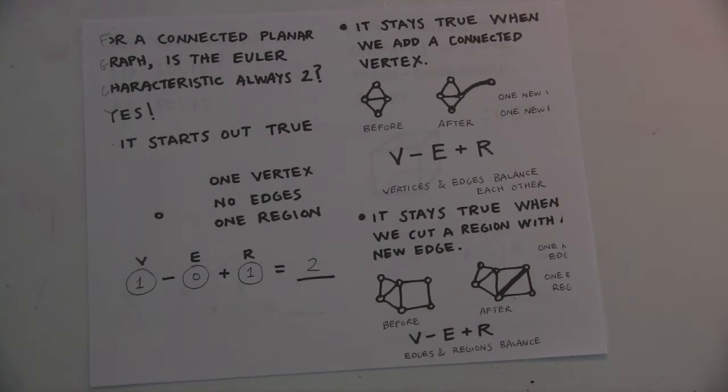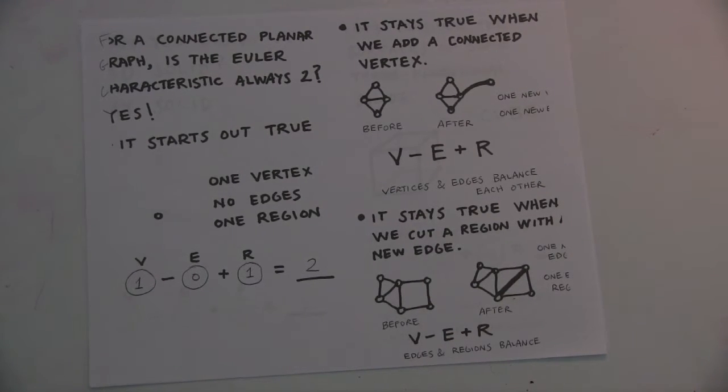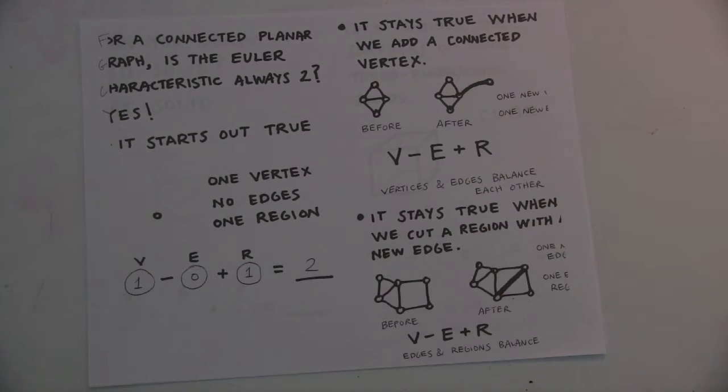In the beginning, it looks at this one point - one vertex, no edges, and one region. So that gives us 2.